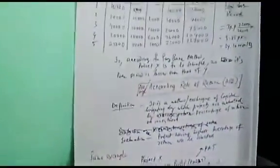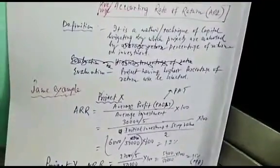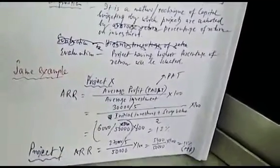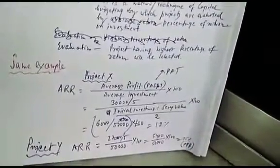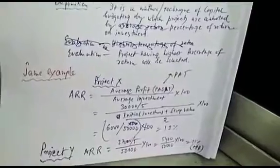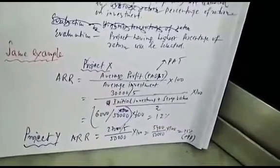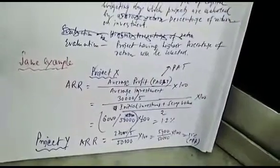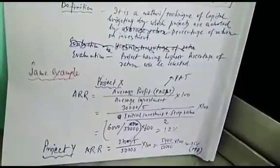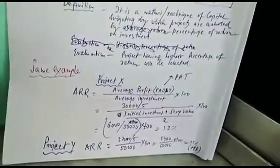Both methods - payback and ARR - are complete. You should practice these from your copy. For Calcutta University, other universities, CA inter, ICAI, CMA inter - whatever questions appeared in the last ten years, I'll do them. If you have problems, my WhatsApp number is 9836955744 or 8961888451. Send me your problems. If you don't have problems, practice yourself and you'll master these two methods. Thank you for today.